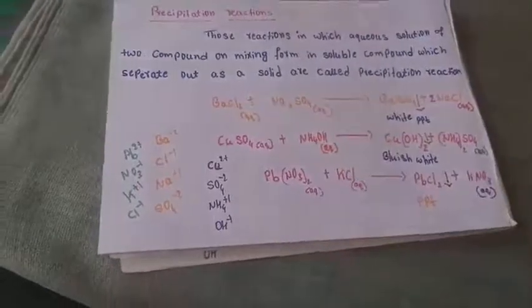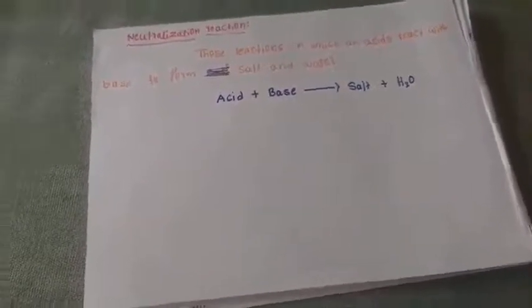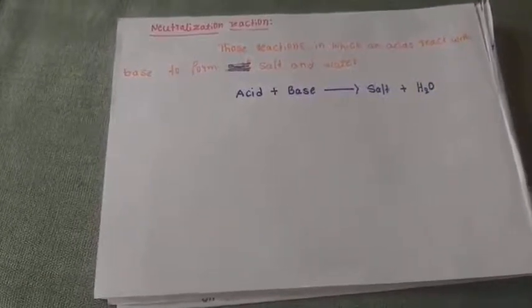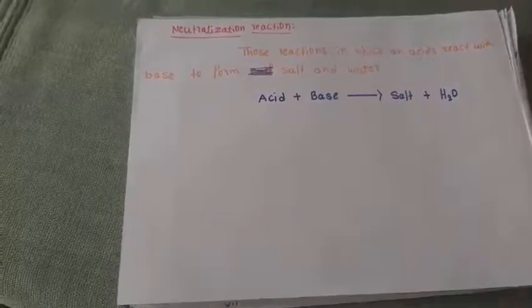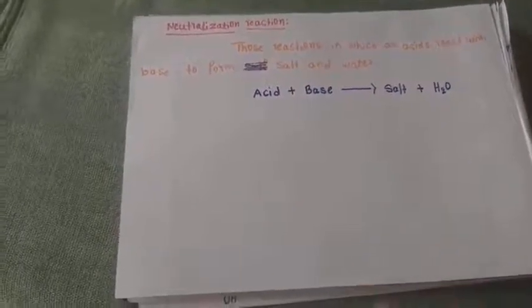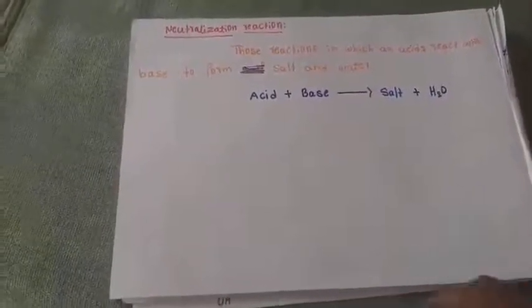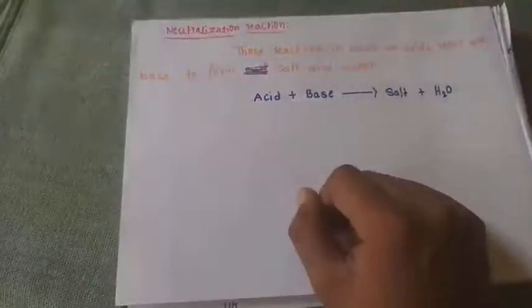I hope you all understand displacement reactions, double displacement reactions, and precipitation reactions. Some more examples will be shared — please solve them, and ask if you don't understand. The next topic of this chapter is neutralization reactions. The name itself suggests the meaning: neutralization means making something neutral.